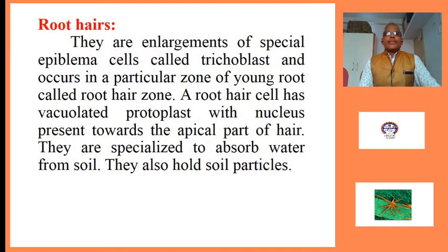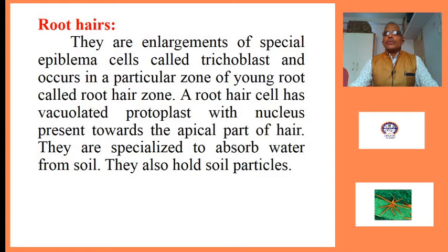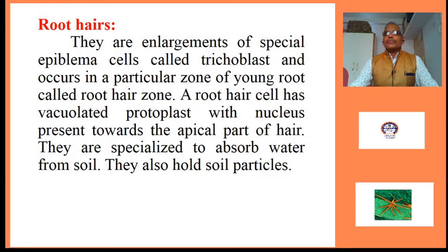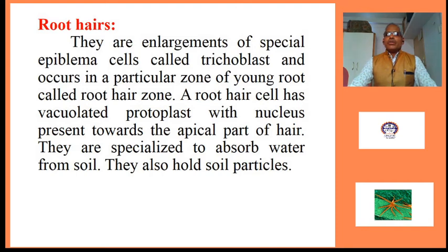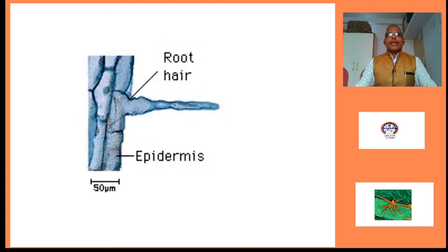Root hairs: They are enlargements of special epiblema cells called trichoblasts and occur in a particular zone. A root hair cell has a vacuolated protoplast with the nucleus present towards the apical part of the hair. They are specialized to absorb water from soil. They also hold soil particles. These are the root hairs arising from the epidermis; they are about 0.5 mm in length and they absorb water and bind the soil particles.